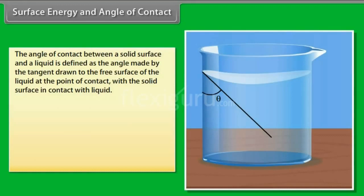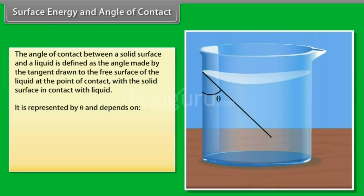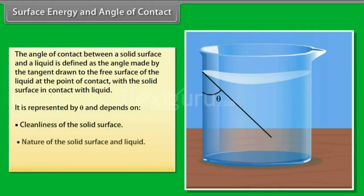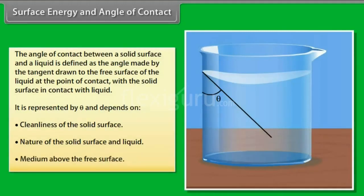The angle of contact between a solid surface and a liquid is defined as the angle made by the tangent drawn to the free surface of the liquid at the point of contact with the solid surface in contact with liquid. It is represented by theta and depends on cleanliness of the solid surface, nature of the solid surface and liquid, and medium above the free surface.